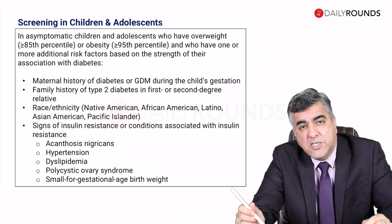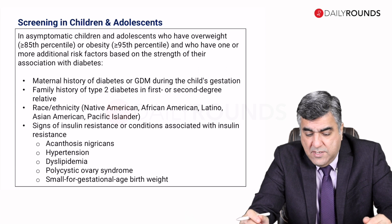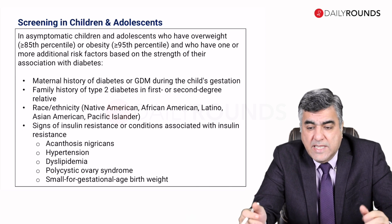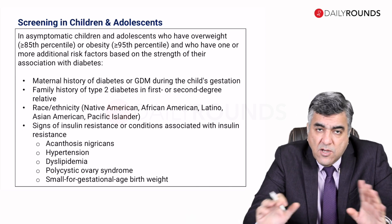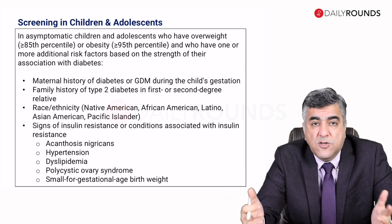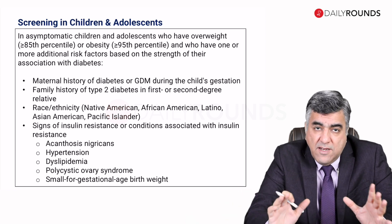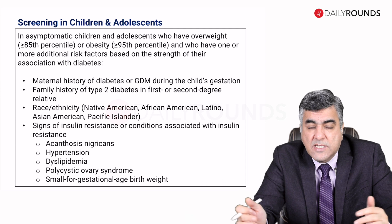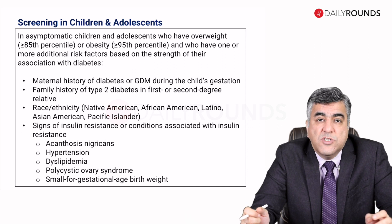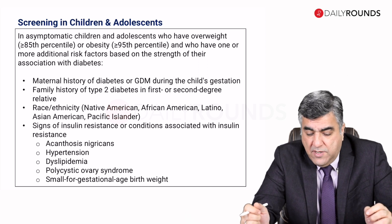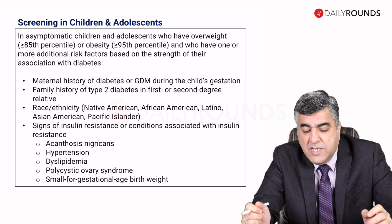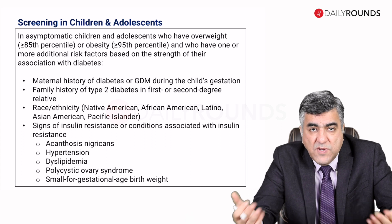Regarding screening recommendations for children and adolescents: in asymptomatic children and adolescents who are overweight — meaning above the 85th percentile for normal weight profiles — or obese — above the 95th percentile for their matching age criteria — or who have one or more additional risk factors based on their association with diabetes, screening should be done. This includes those with maternal history of diabetes or gestational diabetes during the child's gestation.